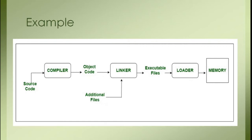So, after writing the source code, you are working with developing software: the compiler takes the source code and produces object code; the linker takes the object code and adds additional files to create an executable file; the loader loads the executable file into memory; and after running, your program executes. These four — programming language, compiler as language translator, linker, and loader — are all developing software.